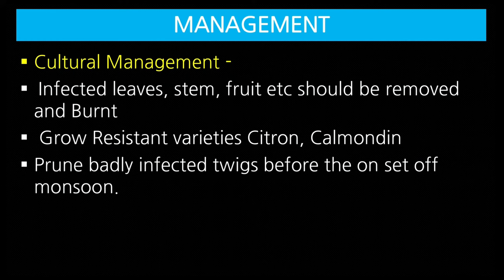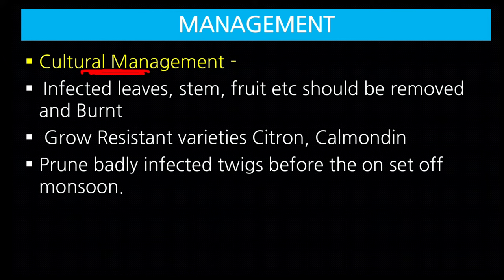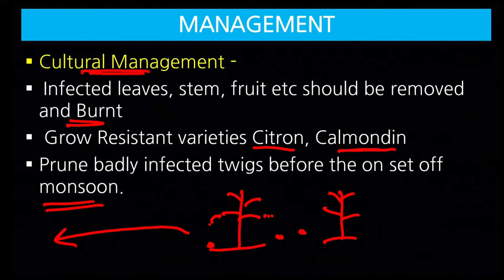For management of any disease, we should always adopt integrated disease management practice. Cultural management: infected leaves, stems, and fruits should be removed and burned. Grow resistant varieties like citron and calmondine. Prune badly infected twigs before the onset of monsoon. Infected plant parts in the orchard should be collected and burned, and disease-resistant varieties should always be grown.